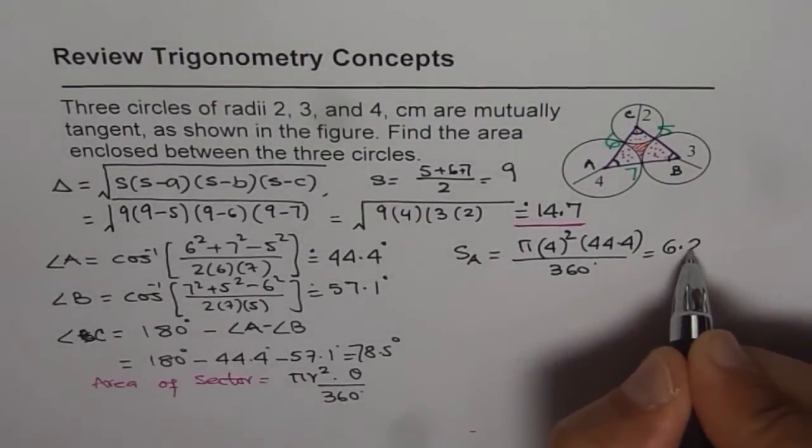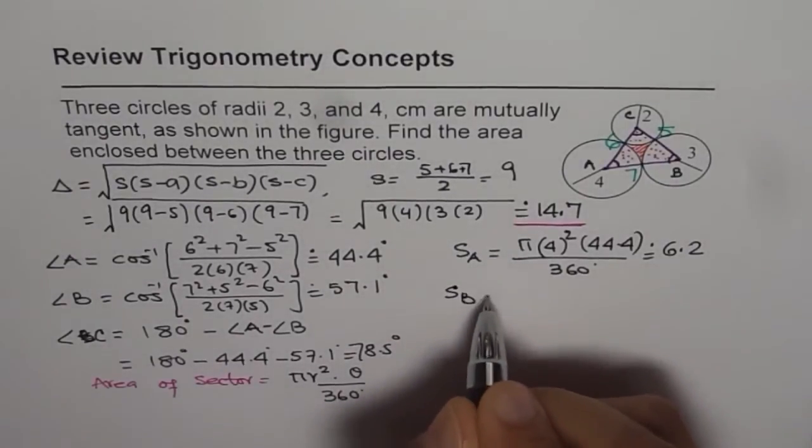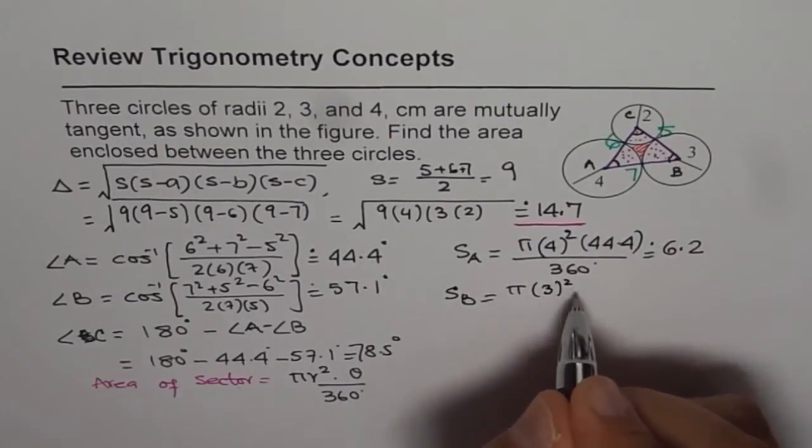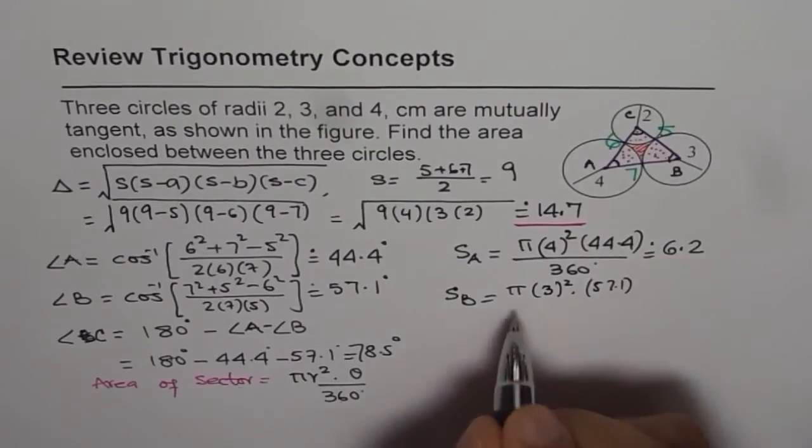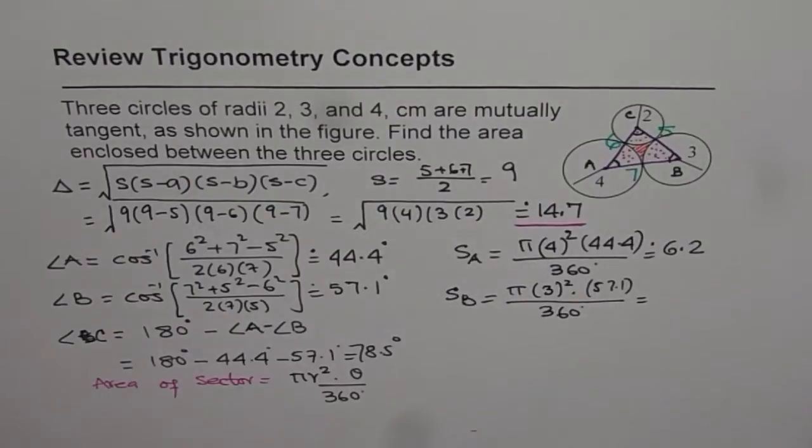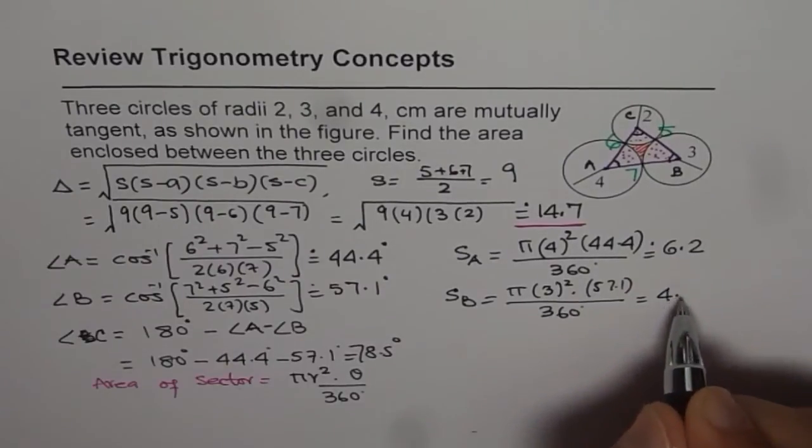Now sector B area is how much? Pi times 3 square and the angle is 57.1 divided by 360. That gives us pi times 9 times 57.1 divided by 360 equals to 4.48. Let me write 4.5.